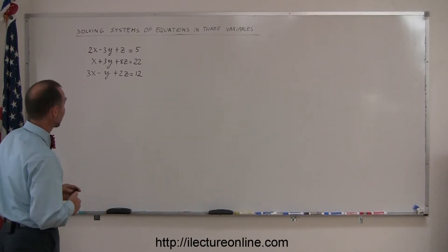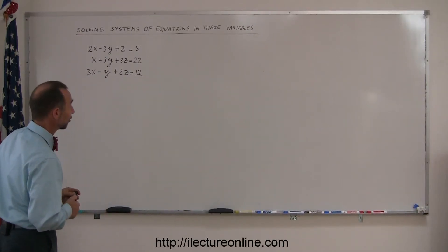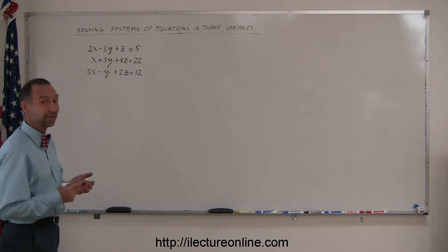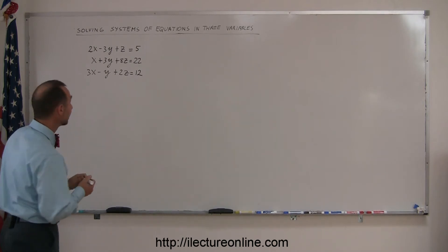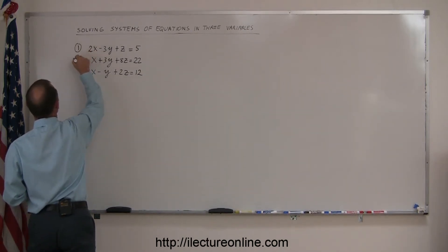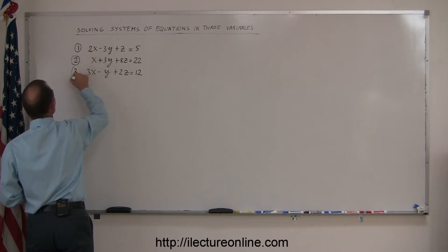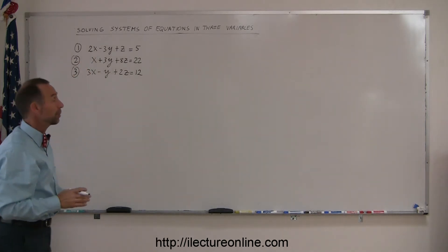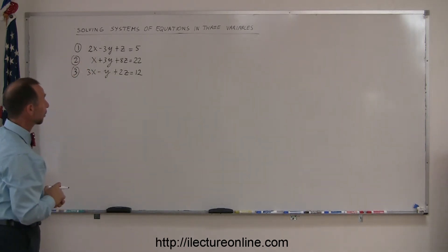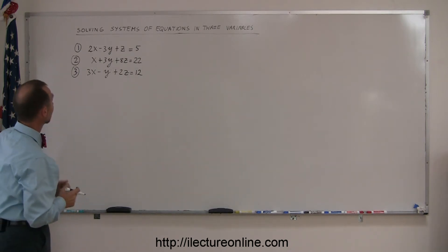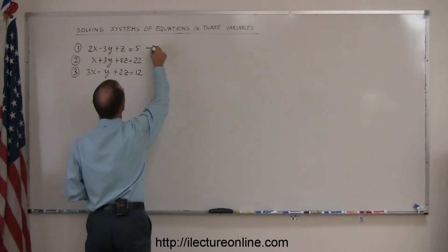Another example of how to solve systems of equations in three variables. Here are three equations, and it's not a bad idea to go ahead and label the three equations. Step number one is to take one of the three equations and solve it for one of the three variables. To illustrate that you can pick any variable, I'm going to take my first equation and solve that for z.